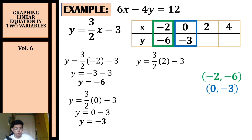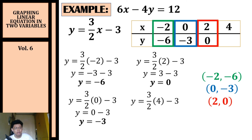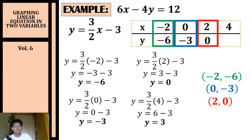Substituting x equals two: y equals three-halves times two minus three, which gives three minus three, so y equals zero — coordinate (2, 0). Substituting x equals four: y equals three-halves times four minus three, giving six minus three, so y equals three — coordinate (4, 3).